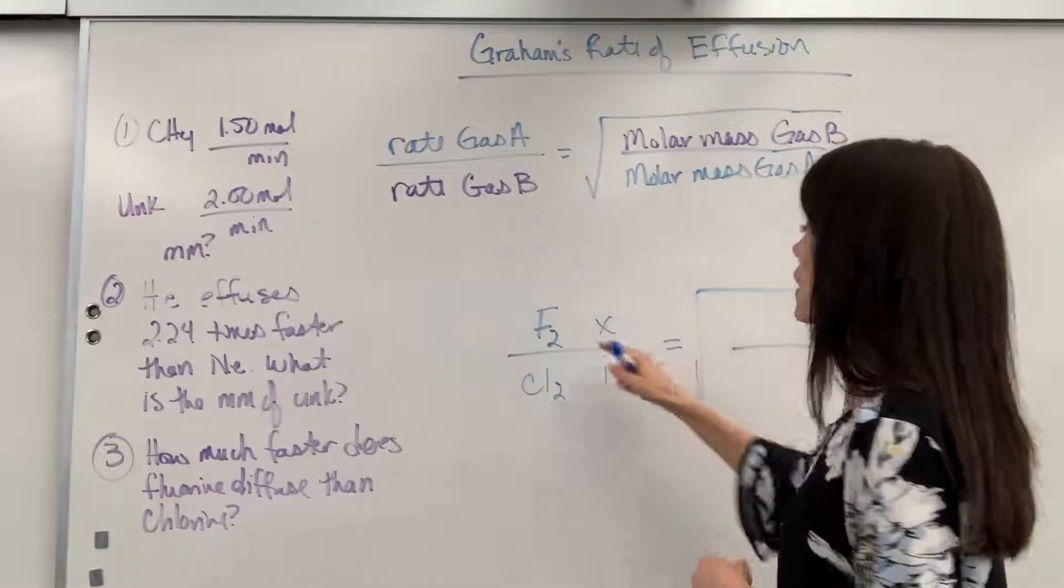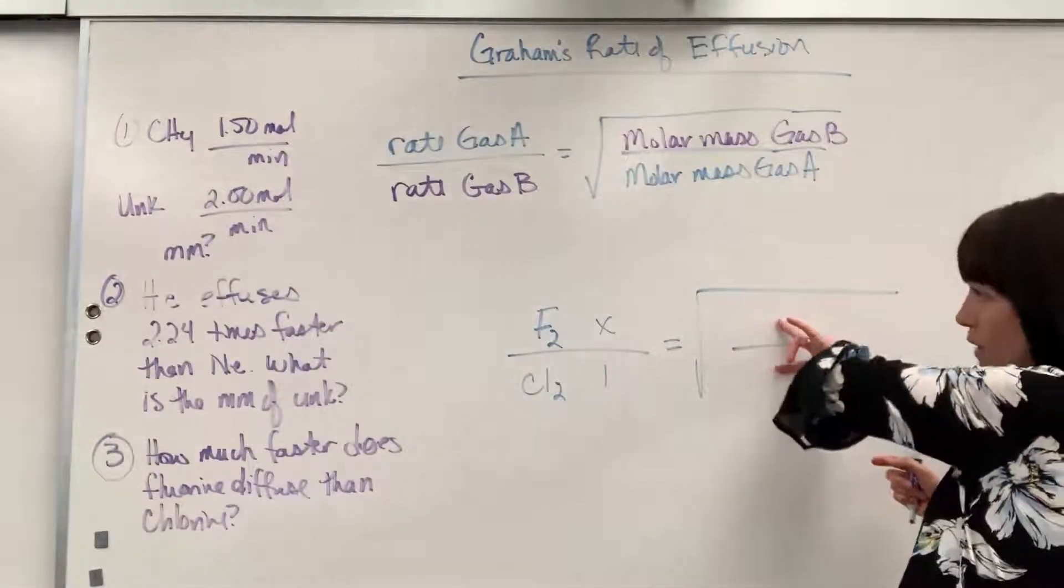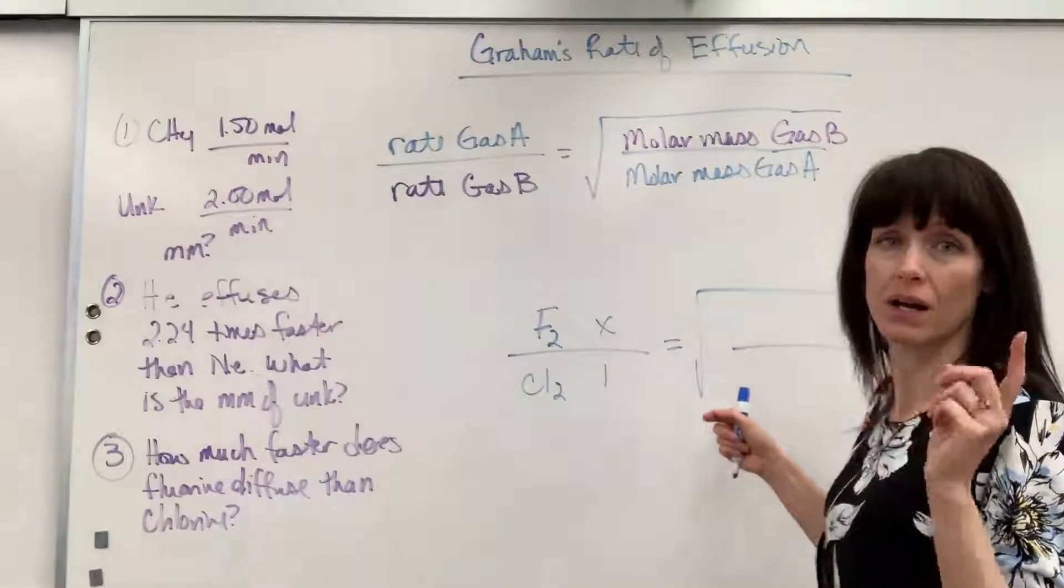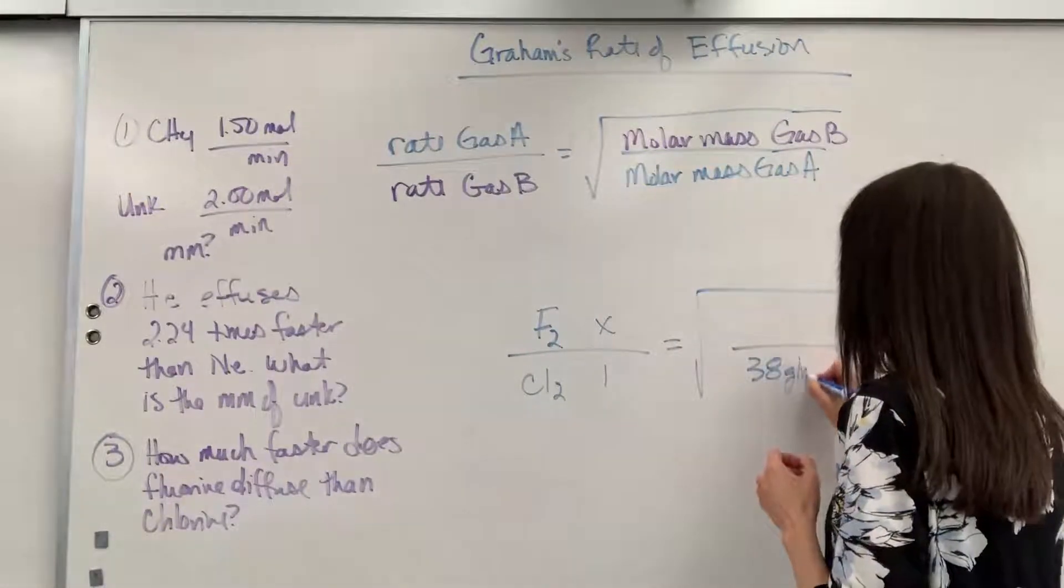Equals square root. I'm going to switch the molar masses. Just reciprocate how that chlorine and fluorine are written. Fluorine in its molar mass is 19 times 2 is 38 grams per mole. Remember, that's chlorine.